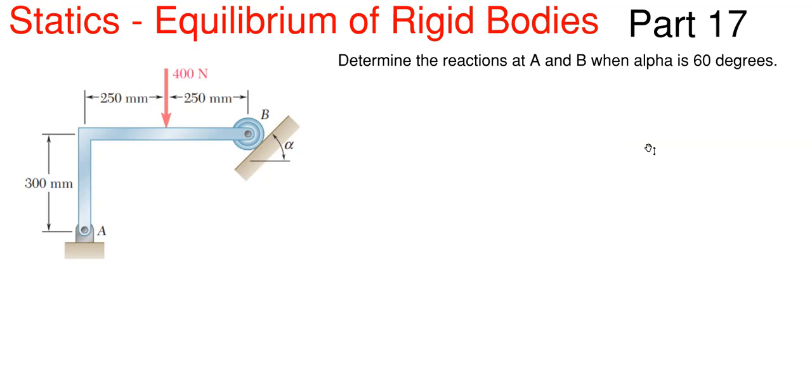In today's topic, we'll be covering statics, equilibrium of rigid bodies, and we're going to be finding some reactions. So this will be our 17th part in this particular series. And what we have going on here is that we have to find the reactions here at this pin at A, this roller at B, knowing that this alpha here is 60 degrees and we only have one applied force of a 400 Newton force applied at the distance shown.